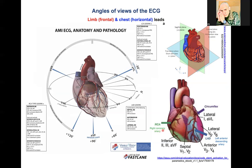Here is the right coronary artery, RCA. Here is the left anterior descending artery, which is the major coronary artery. And here is the circumflex artery. We use these coronary arteries as points of reference to evaluate pathological changes in cardiac activity.